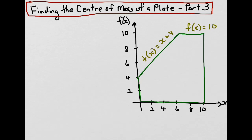Our goal is to find the center of mass of a plate, which is shown outlined in green in the diagram. Experimentally, we've found the coordinates of the center of mass to be somewhere around here, but let's use calculus to find the exact coordinates of the center of mass.